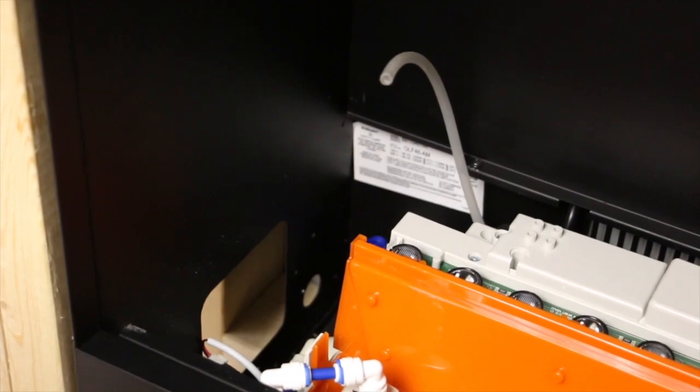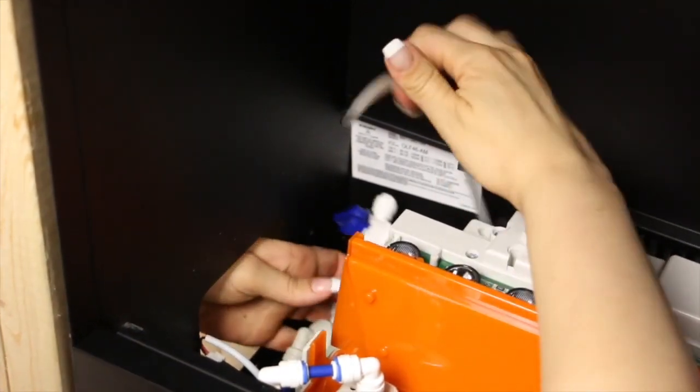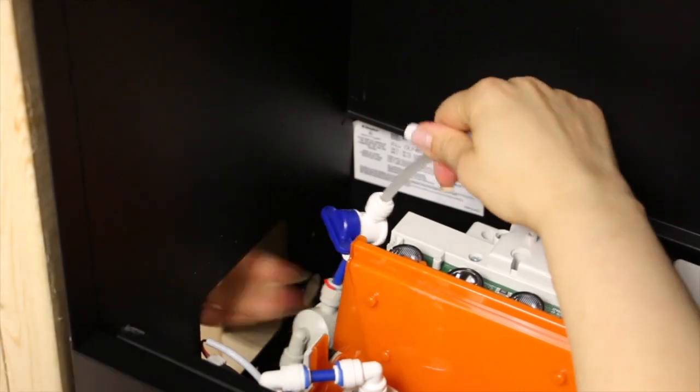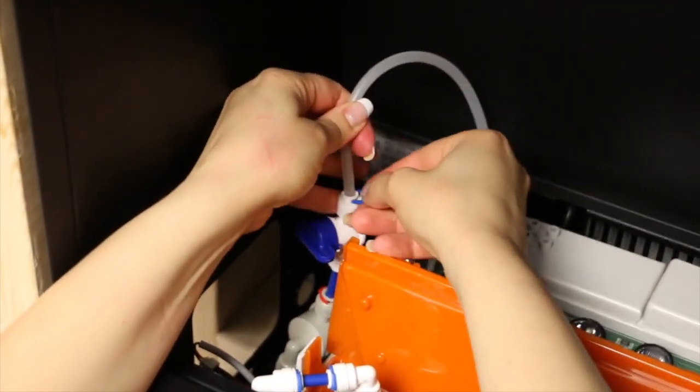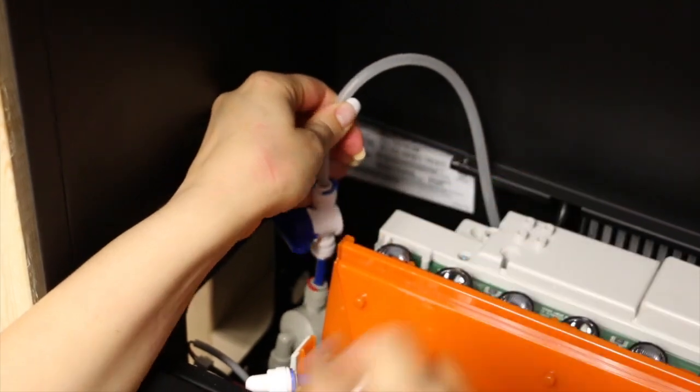Ensure that the end of the tubing is cut square to prevent leaking. Connect the water supply tubing to the main water valve by removing the locking ring and inserting the tubing so that it is fully inserted. Reinstall the locking ring.